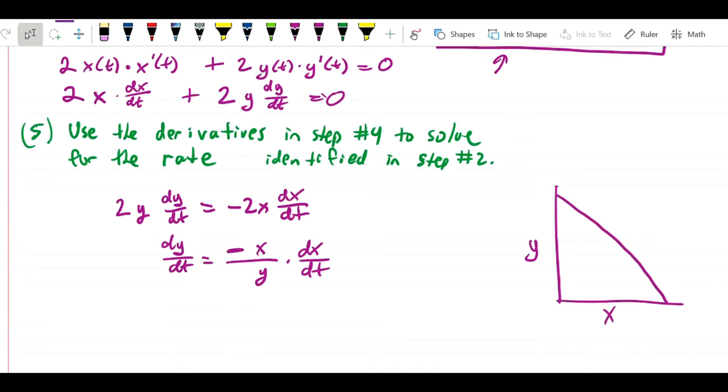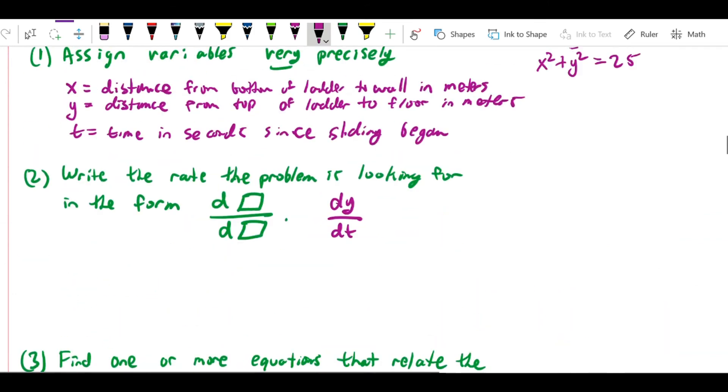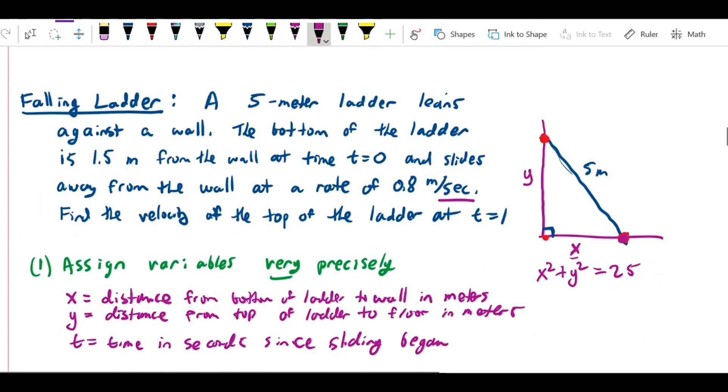Recall that we have x, y, and 5. The ladder is sliding at 0.8. We're given in the problem that at t equals 0, the ladder is 1.5 meters from the wall. In other words, x is 1.5. But we want to know what the situation is at t equals 1, and the ladder is sliding away from the wall at 0.8. So if it starts at 1.5, and this number increases by 0.8 every second, then if t equals 1, it's going to be 1.5 plus 0.8 equals 2.3.